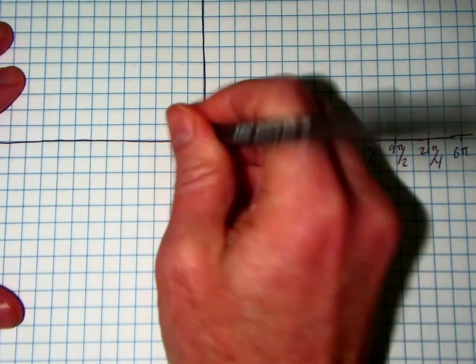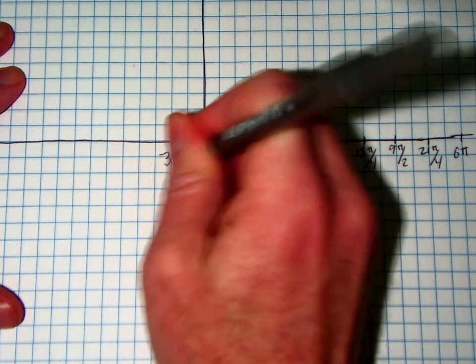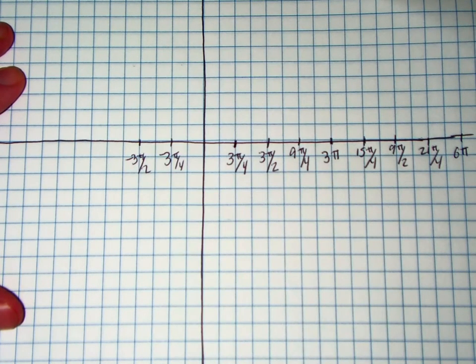And I can go backwards a couple spots too if I want to. Negative 3 pi over 4, same pattern, negative 3 pi over 2. And I can keep on going as long as I wanted to.